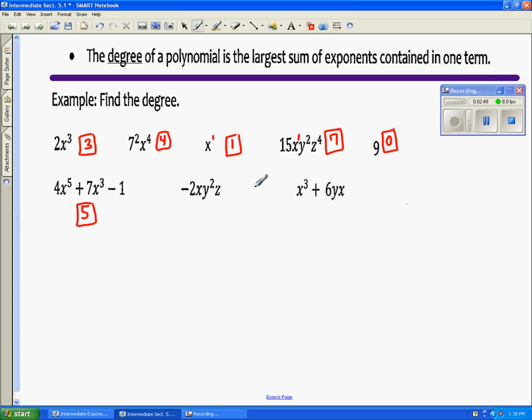The next term, there's a known one here, and there's a known one here. So when we add them all together, we get one plus two plus one. The degree is going to be four.